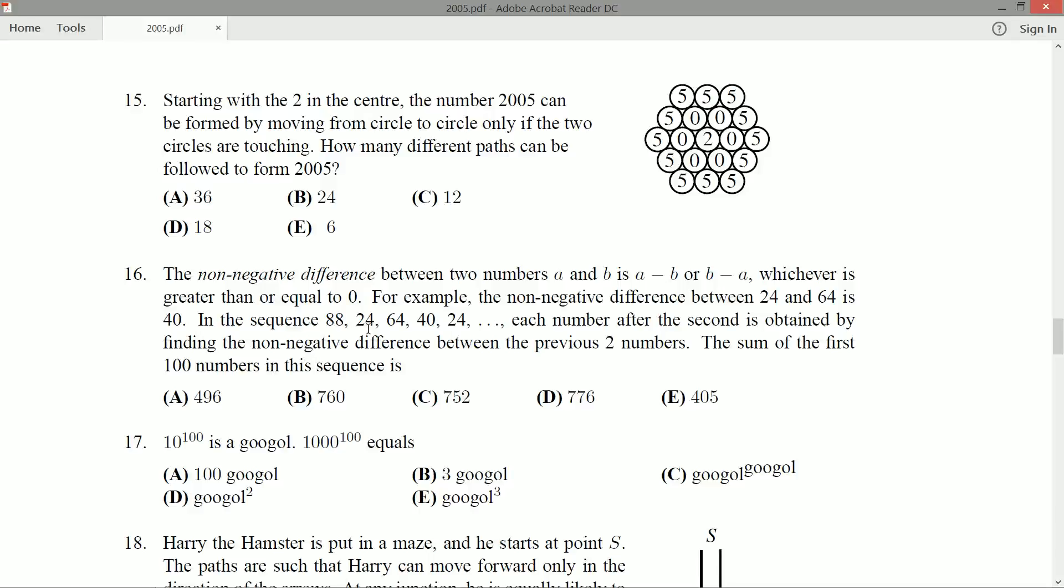In the sequence 88, 24, 64, 40, 24, each number after the second is obtained by finding the non-negative difference between the two previous numbers. The sum of the first hundred numbers in this sequence is...